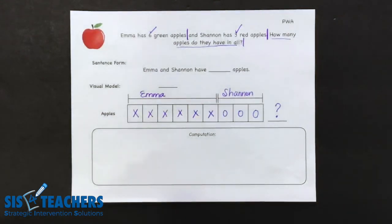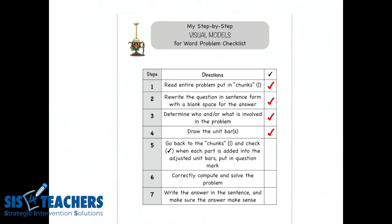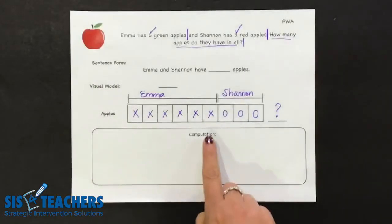So let's go ahead and figure out where we want to go to the checklist to see what we have that we're looking at. We're going to check off going back and adding the chunks in. The next part of our problem is to correctly compute and solve the problem. Talking about the word computation as we go back to the journal, here is where students are going to do their work.